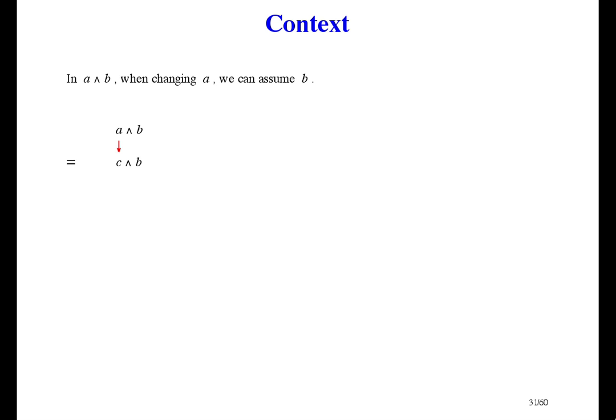Why? Well, B might be true or it might be false. If it happens to be true, then we made the right assumption, so that's all right. But maybe B is false and we made the wrong assumption. But if B is false, then it doesn't matter what A was or what C is, because both lines are false anyway, so they're still equal. So whenever you're working on a conjunct, you can assume the other conjunct. Either way around.